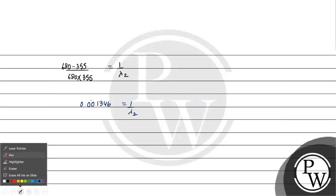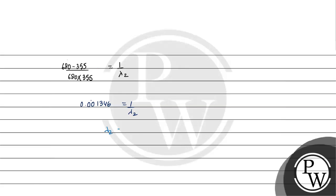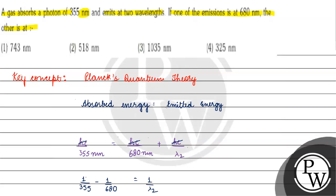Removing λ₂, we get λ₂ equals 1/0.001346, which is approximately 742.9 nanometers, equal to 743 nanometers. The correct answer for this question is option 1. I hope you understood it well — thank you and all the best!